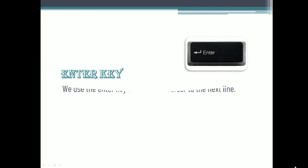The next key is the enter key. We can use the enter key to move the cursor to the next line. Suppose we want to move the cursor to the next line, we can press the enter key. There are 2 enter keys available on a keyboard — one is near the alphabet keys and the other is near the number keys. We can move our cursor downwards using the enter key.